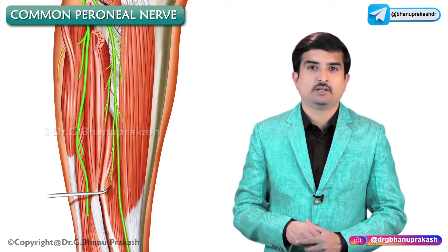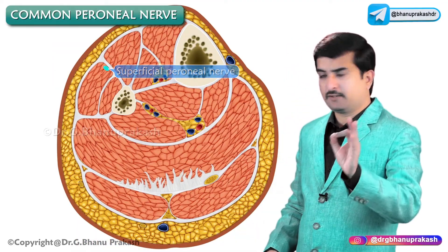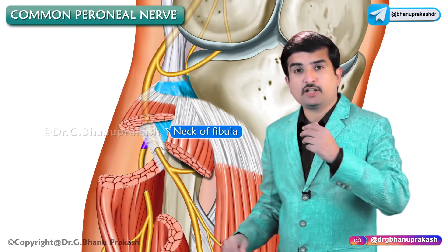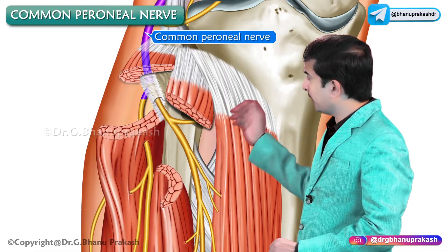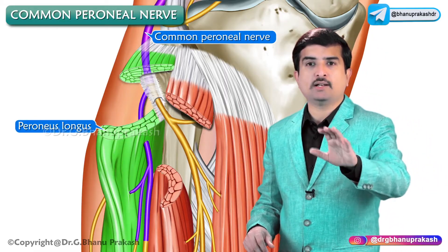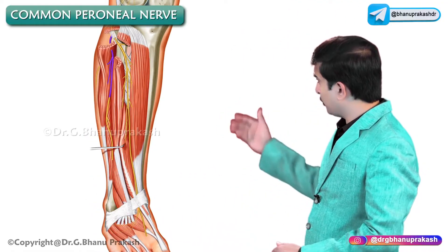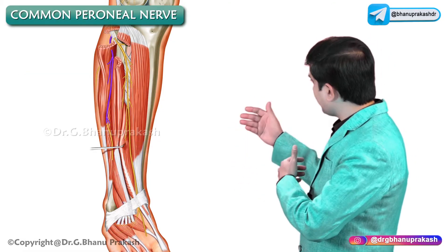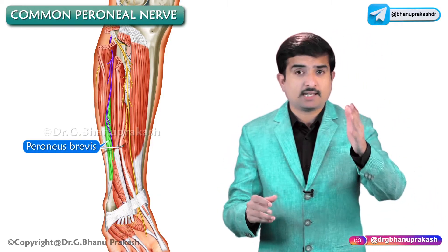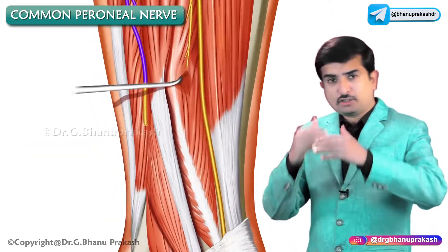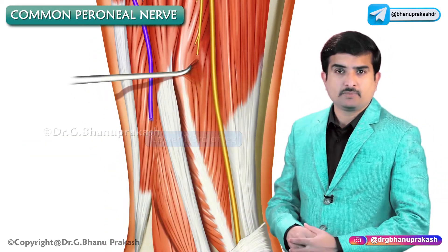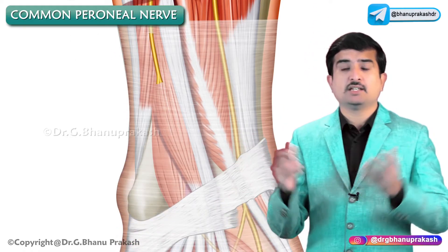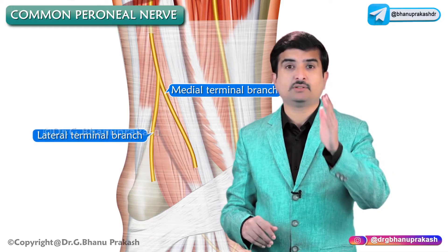The superficial peroneal nerve is the main nerve of the lateral compartment of the leg. It arises on the lateral aspect of the neck of the fibula as a terminal branch of the common peroneal nerve, within the peroneus longus muscle. It passes between peroneus longus and peroneus brevis, then in the groove between peroneus brevis and extensor digitorum longus. By the time it reaches the lower one-third of the leg, it pierces the deep fascia and becomes superficial.